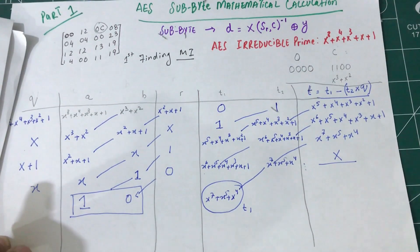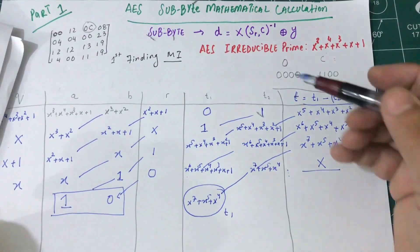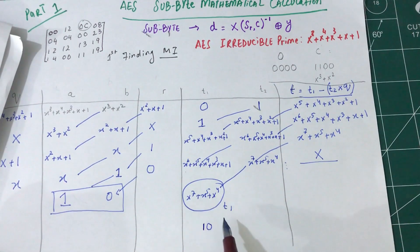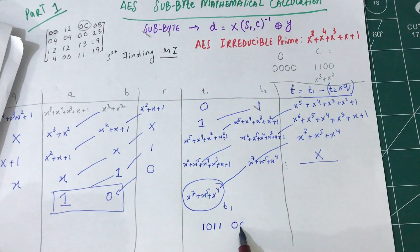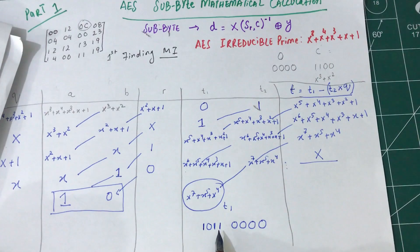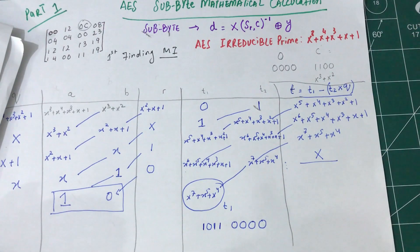This t1 value is my multiplicative inverse. Let's convert this into binary: bit 7 is high, bit 6 is low, bit 5 is high, bit 4 is high, bit 3 is low, bit 2 is low, bit 1 is low, bit 0 is low. Converting to hexadecimal — 8 plus 2 plus 1 is 11, which is B, and the lower nibble is 0, so we get B0.